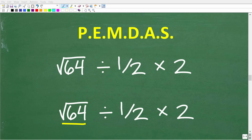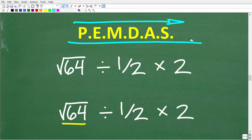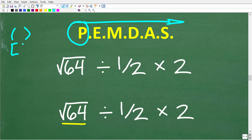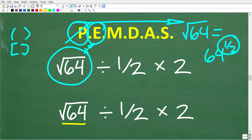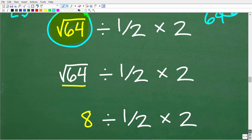Now let's go ahead and solve the original problem. If you're new to basic math, write out the PEMDAS acronym as a checklist and follow it strictly from left to right. First question: do we have any parentheses? No, there are no parentheses or grouping symbols, so we move on. Next step is exponents. Do we have any exponents? Yes — we have the square root of 64, which we can write as 64 to the one-half power. So the first thing we need to do is find the square root of 64.